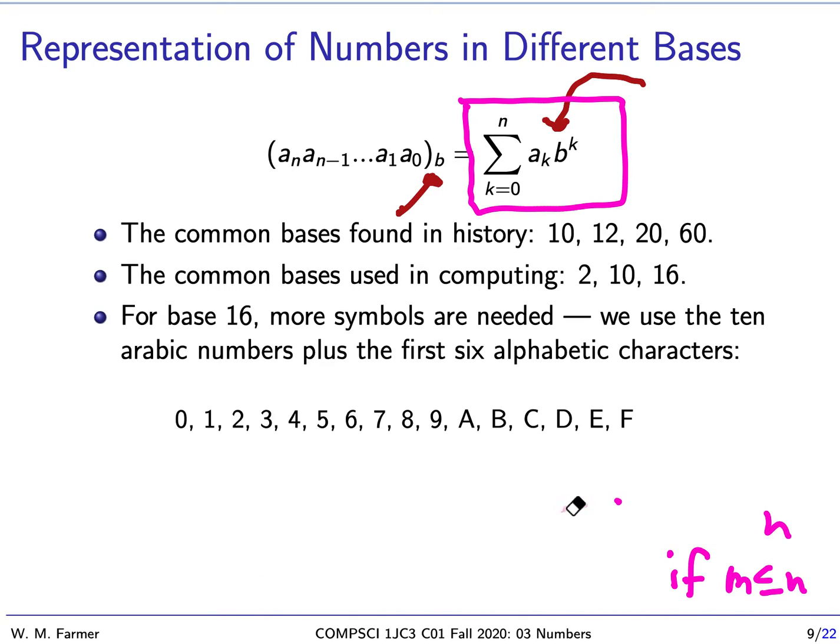There's different bases that have been used in history. I've mentioned the most popular ones here, which are base ten. We use that every day. Sometimes you see base twelve. We even have a number for twelve, a dozen. We even have a number for twelve to the second power, a gross. Two historically important bases are twenty. The Mayans used base twenty. And base sixty, the Babylonians used base sixty. Base sixty, we still find today in things like sixty seconds in a minute, sixty minutes in an hour, three hundred sixty degrees in a circle.